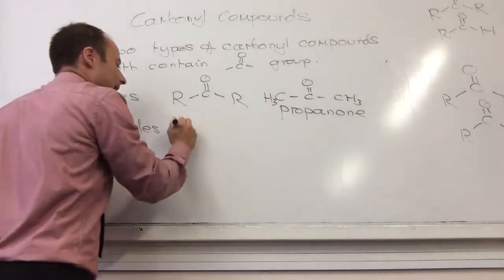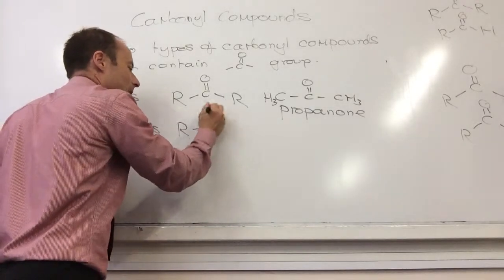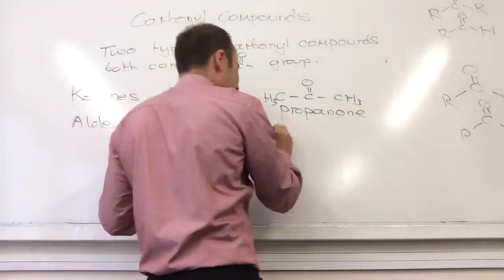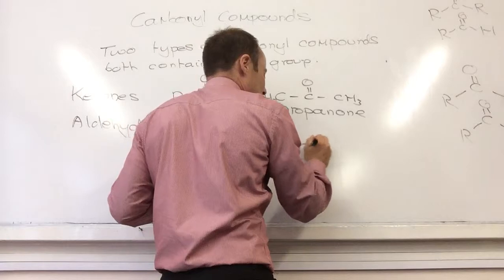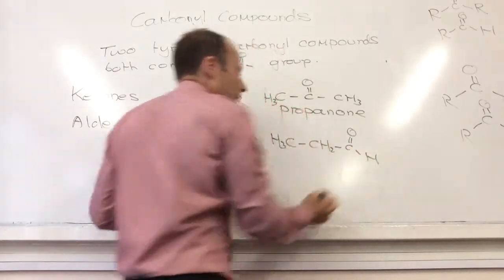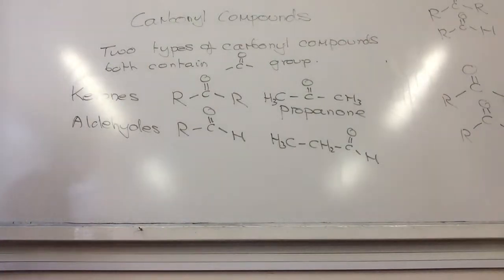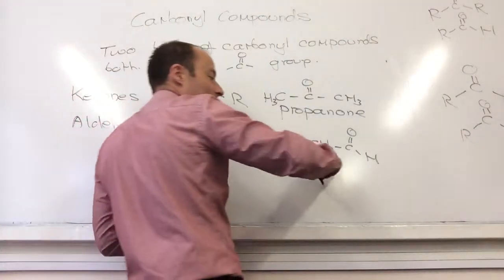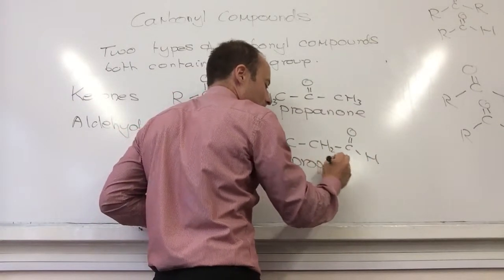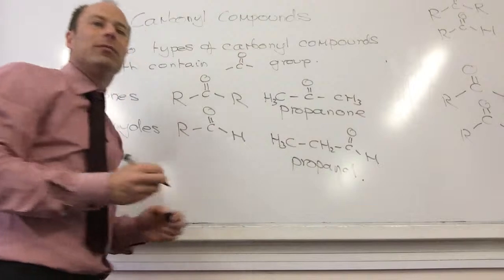Aldehydes have the R-C double bond O, but they end with an H. So if I was going to do the same type here, it's got to be on the end. So what's this going to be called? How many carbons? Propanal. Do I need a number? No, it's got to be on the end. Does it have three carbons? Or if it had two?